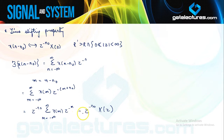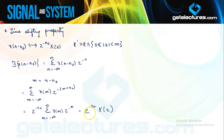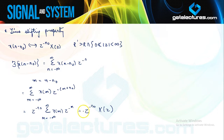Because of this multiplication by z^{−n₀}, for n₀>0 additional poles are introduced at z=0 and zeros deleted at z=∞. Similarly, for negative n₀, additional zeros are introduced at z=0 and deleted at z=∞. Therefore, we cannot include z=0 or z=∞ in the ROC. That is why the new ROC excludes these points: if any of these values of z occur, the ROC would not be defined.